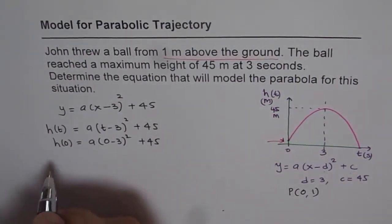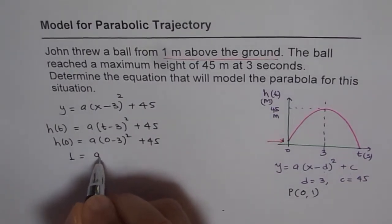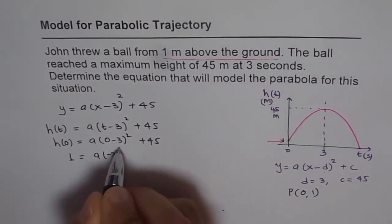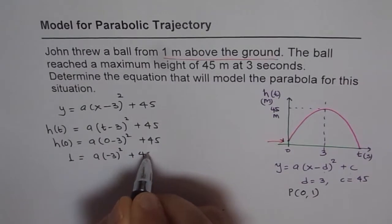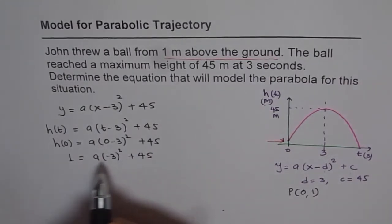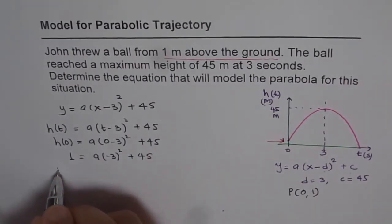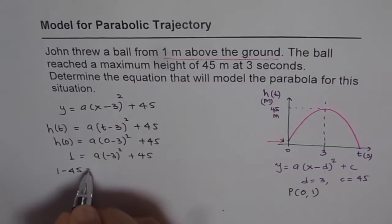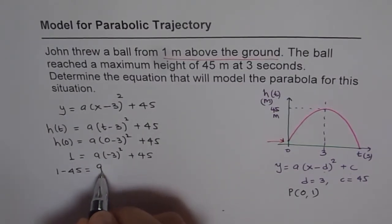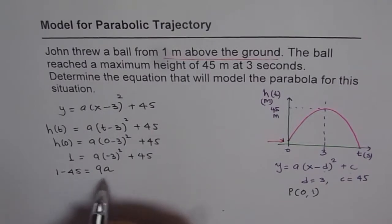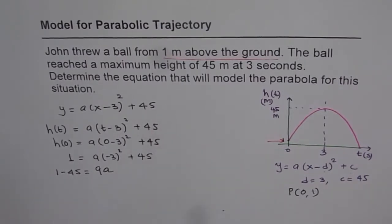Height at zero is given to us as 1. So 1 equals a times (minus 3) squared plus 45. We can bring 45 to the left side. So it is 1 minus 45 equals (minus 3) squared is 9, 9 times a. And from here this gives us the value of a.